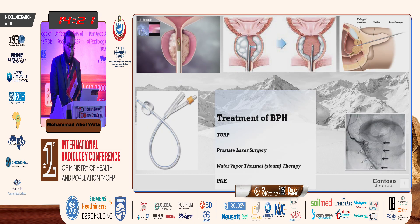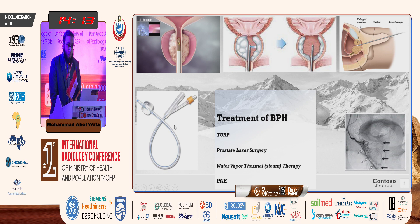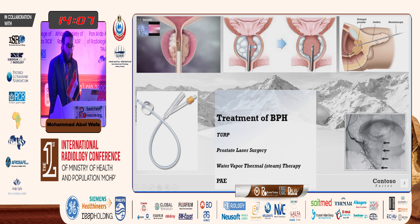Treatment of benign prostatic hyperplasia includes catheterization in case of urinary retention and surgical procedures. The gold standard is transurethral resection of the prostate, and other options include prostatic laser surgery or steam therapy.